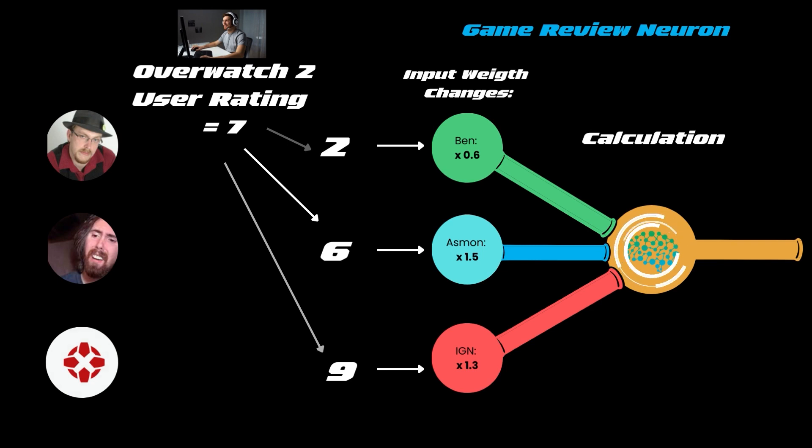Then we can see we have adjusted the weights of each critic. Ben has lost some weight from 1 to 0.6, Asmongold has gained weight from 1 to 1.5, and IGN has also gained weight up to 1.3.